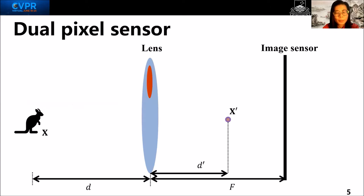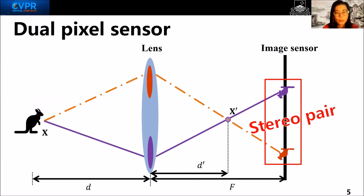A DP camera imaging process can be modeled like this. One image formed from light rays passing through the right half of the aperture, and one from those passing through the left half. Because of the displacement of the two half-apertures, the two images form a stereo pair.